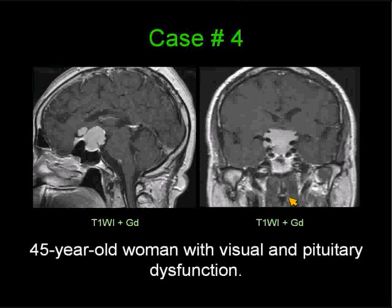Case number four: a 45-year-old woman with visual and pituitary dysfunction. You are shown a slightly off-midline sagittal post-gadolinium T1-weighted image on the left, and on the right a coronal T1-weighted image following gadolinium administration. I'll give you a couple of seconds to look at the findings. You should be able to suggest not one, but perhaps 10 differential diagnoses in this case.